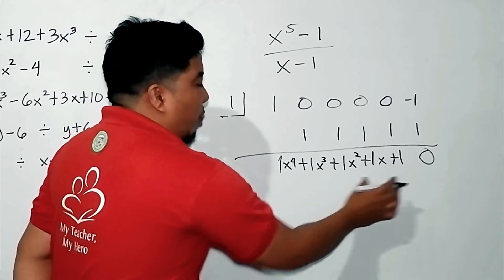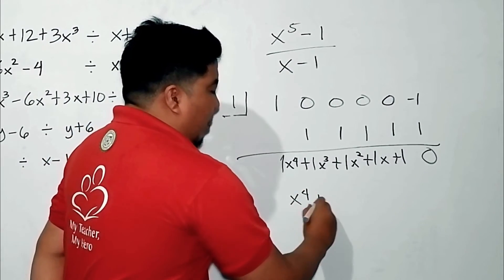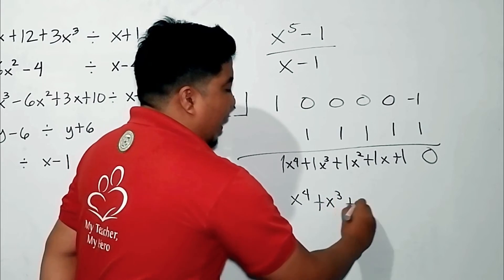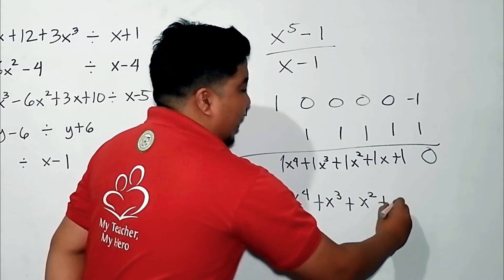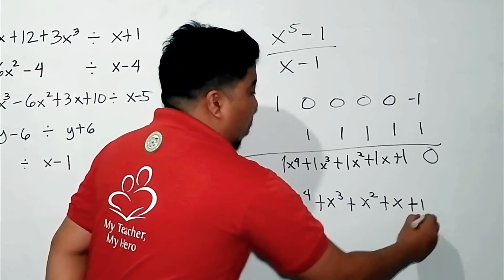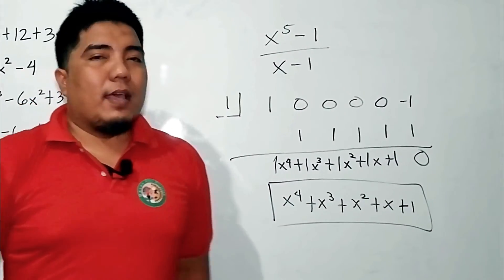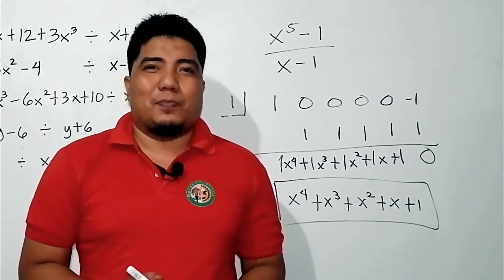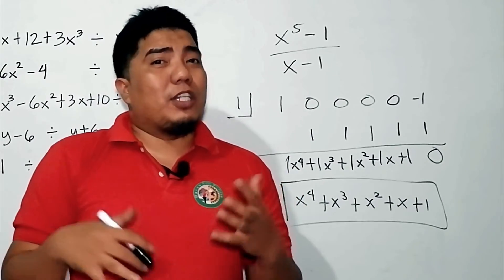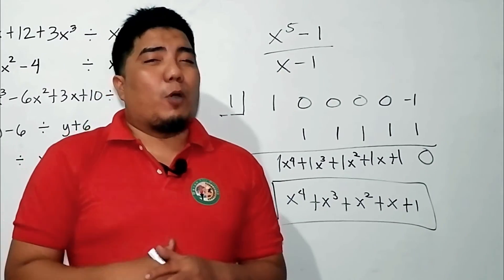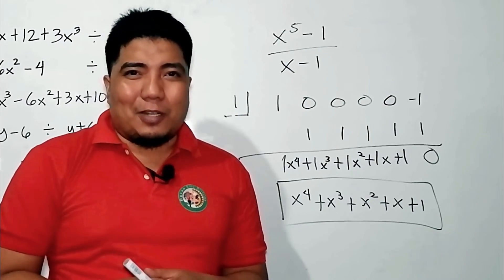Since this is x to the fifth divided by degree 1, we lower our answer to x to the fourth. We have x⁴, x³, x², x, and then a constant. Applying the signs — all positive — and organizing: x⁴ + x³ + x² + x + 1. That is our final answer, and this is how you divide polynomials using synthetic division.